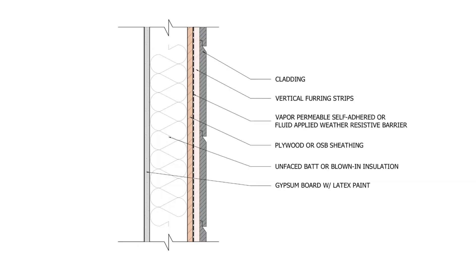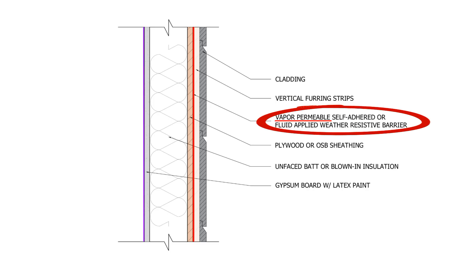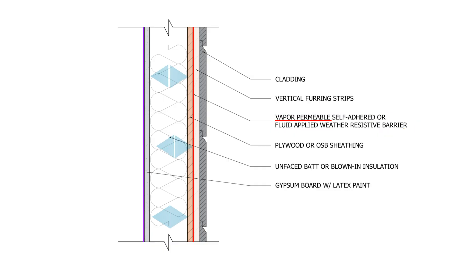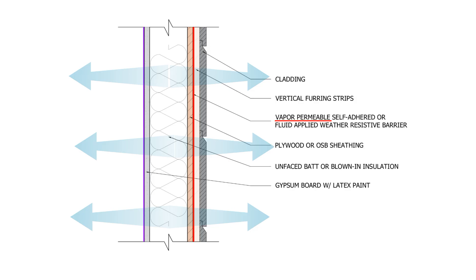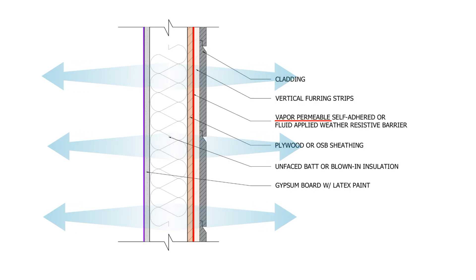In a typical framed wall assembly in a mixed climate — meaning a good mix of warm and cold weather throughout the year but overall fairly mild — we probably want to use a vapor permeable air barrier. Not too permeable, but not too impermeable either. This allows for drying in both directions via diffusion, and so we want to design this as a flow-through wall assembly.